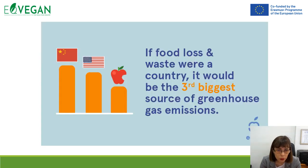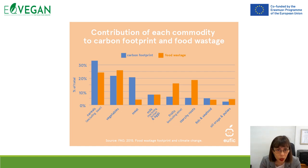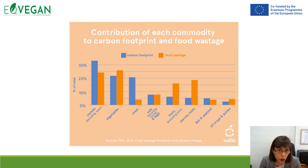If food loss and food waste were a country, it would be the third biggest source of greenhouse gas emissions in the world. Along the entire food chain, we can see on this graph the food wastage footprint and climate change, showing the contribution of each commodity to carbon footprint and food wastage.